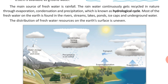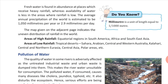Most of the water on the earth is found in rivers, lakes, streams, ponds, ice caps, and underground water. The distribution of fresh water resources on the earth's surface is uneven, meaning fresh water is not equally distributed on earth.